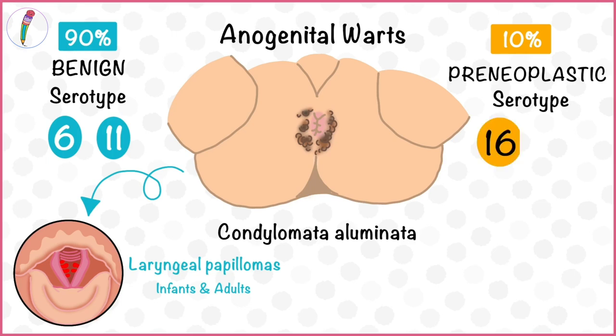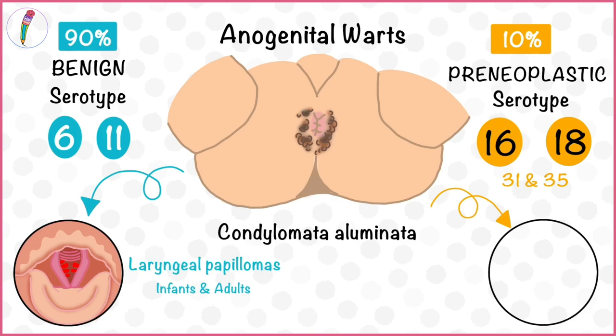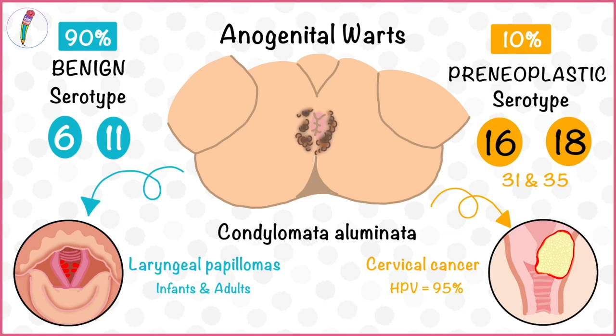Sometimes these anogenital warts can cause pre-malignant lesions. Serotypes 16 and 18 are responsible for this. Very rarely, serotypes 31 and 35 may be seen. This can cause cervical cancer. Human papilloma virus is found in 95% of cases of CIN, or cervical intraepithelial neoplasia, and has been directly linked to the disease.